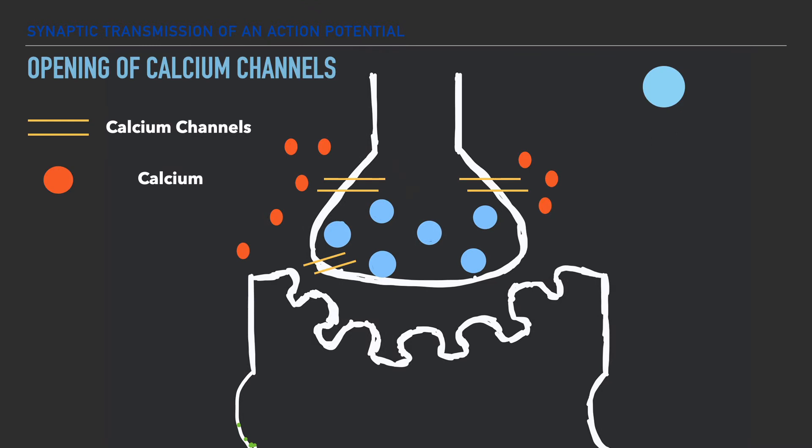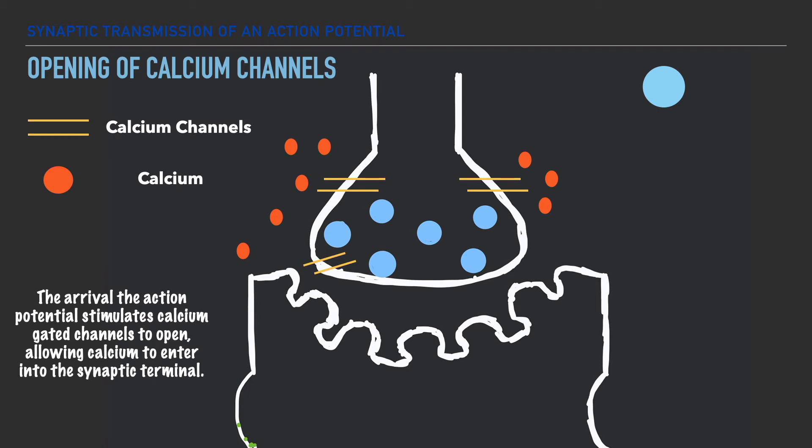The arrival of this action potential now stimulates calcium-gated channels within its membrane to open. And this allows for the presence of calcium to enter the synaptic terminal.